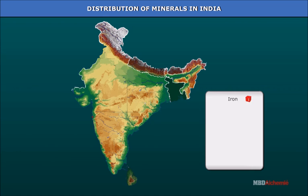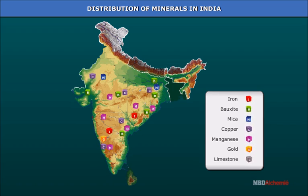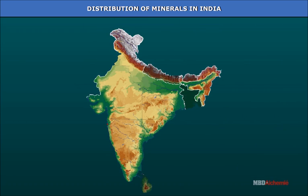Distribution of minerals in India. India is sufficiently rich in mineral resources, providing the country with the necessary base for industrial development. India has the potential to become an industrial power on its own because of its mineral resources. The distribution of minerals in India is uneven. The four chief mineral regions are: the northeastern part of the peninsula including the Chota Nagpur Plateau; the central region of Madhya Pradesh, Maharashtra and Chhattisgarh; the southern plateau; and Rajasthan.